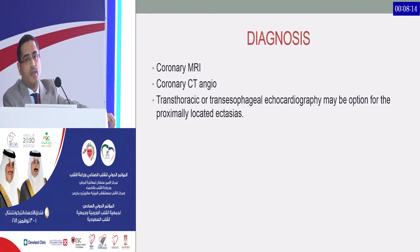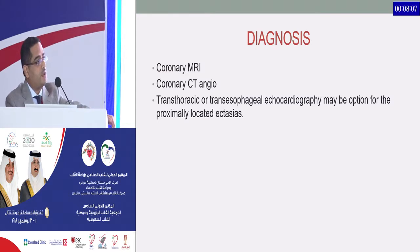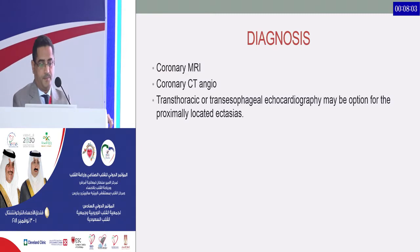Other modalities that can be used include cardiac MRI and coronary CT angiography. Sometimes transthoracic or transesophageal echocardiography can be an option for proximally located ectasia.